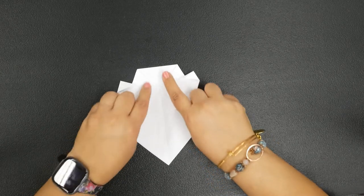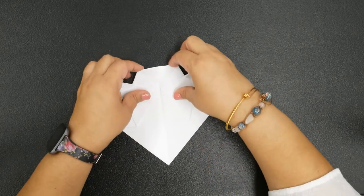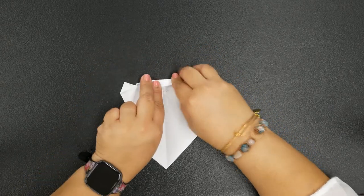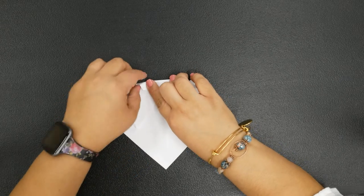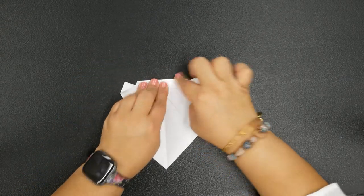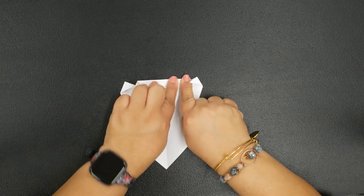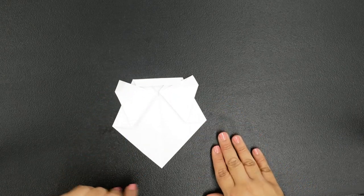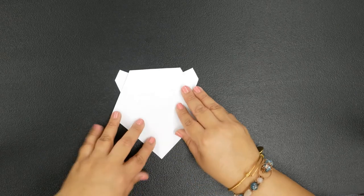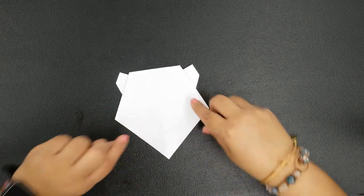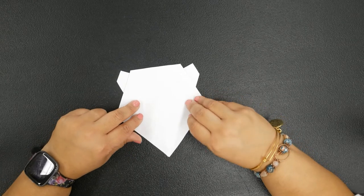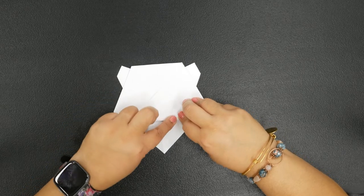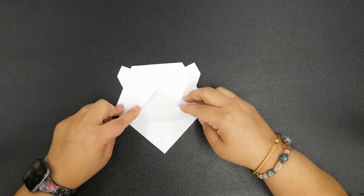This top portion here, bring it downward and we're going to fold it down into a rectangle shape and crease right there. Go ahead and flip it over just like so. Now this sheet right here, the very top one, we're going to bring it towards the middle and crease. Open it back up.